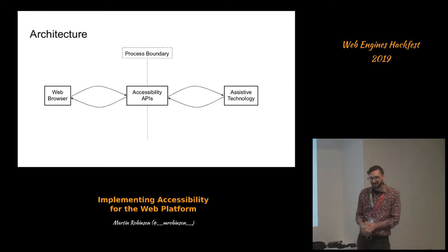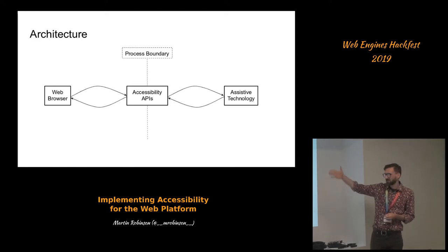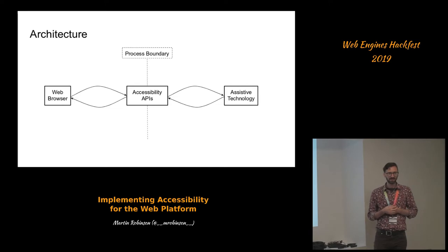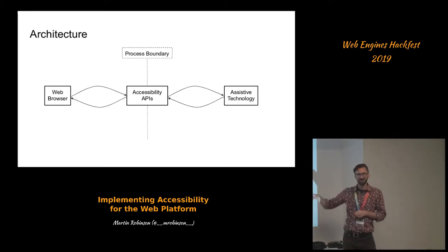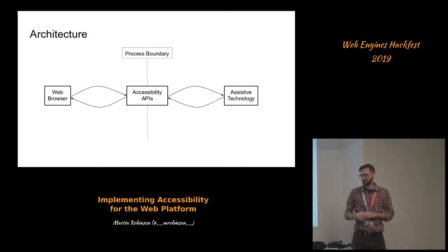Just a very quick overview of what the architecture looks like. Typically on one side you have your web browser, and almost always there's a process boundary and some accessibility APIs that span that process boundary and interact with the assistive technology. The arrows point in both directions because there are queries and commands that can be made from the assistive technology to the web browser, and also an information flow to the assistive technology.